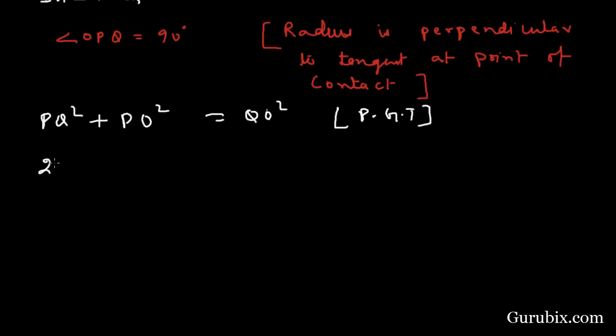PQ is given 24 cm, we have to calculate PO. QO is 25 cm squared, so this equals 625 cm squares. Here we have 576 cm squares.